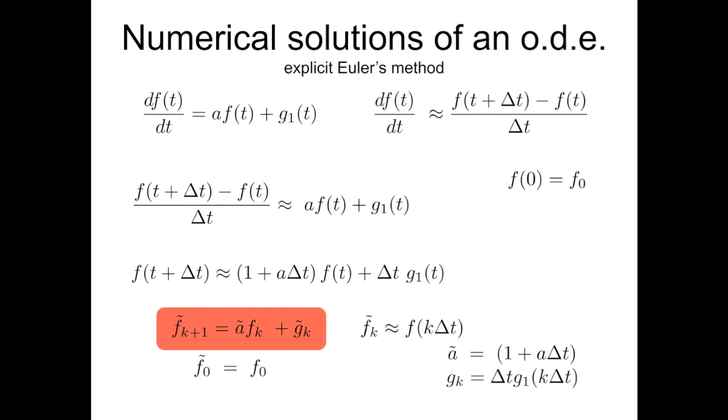And the story of indicating with different symbol f tilde the solution of the discrete, so this series of numbers, this series of samples, is because I hope that these discrete series will be corresponding to the discrete time sampled version of the solution of this differential equation, so f calculated in multiple integer multiples of the delta t, but this is wishful thinking.